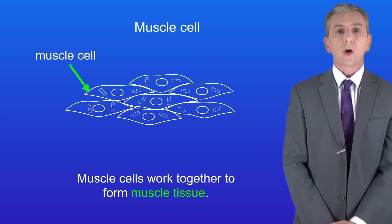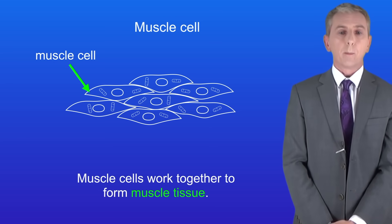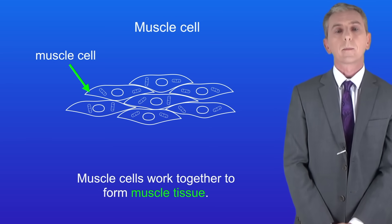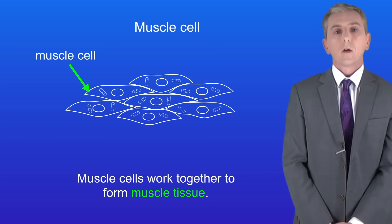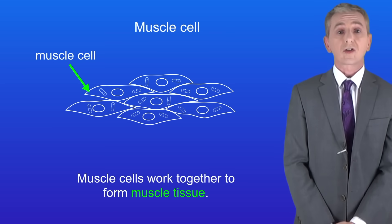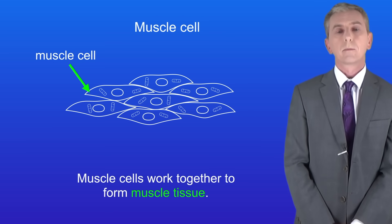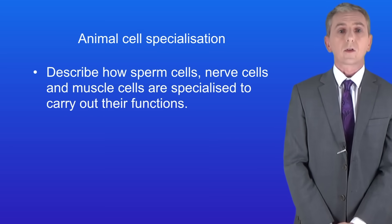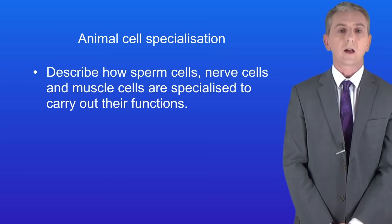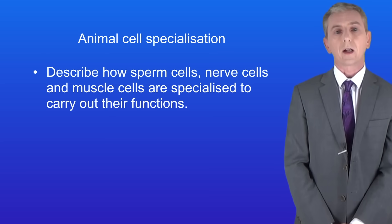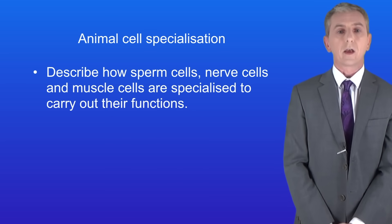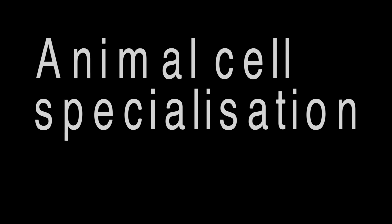One important point about muscle cells is that they work together to form muscle tissue, and we're going to look at that in more detail in a later topic. Remember, you'll find plenty of questions on specialized animal cells in my revision workbook, and you can get that by clicking on the link above. Hopefully now you should be able to describe how sperm cells, nerve cells and muscle cells are specialized to carry out their functions.